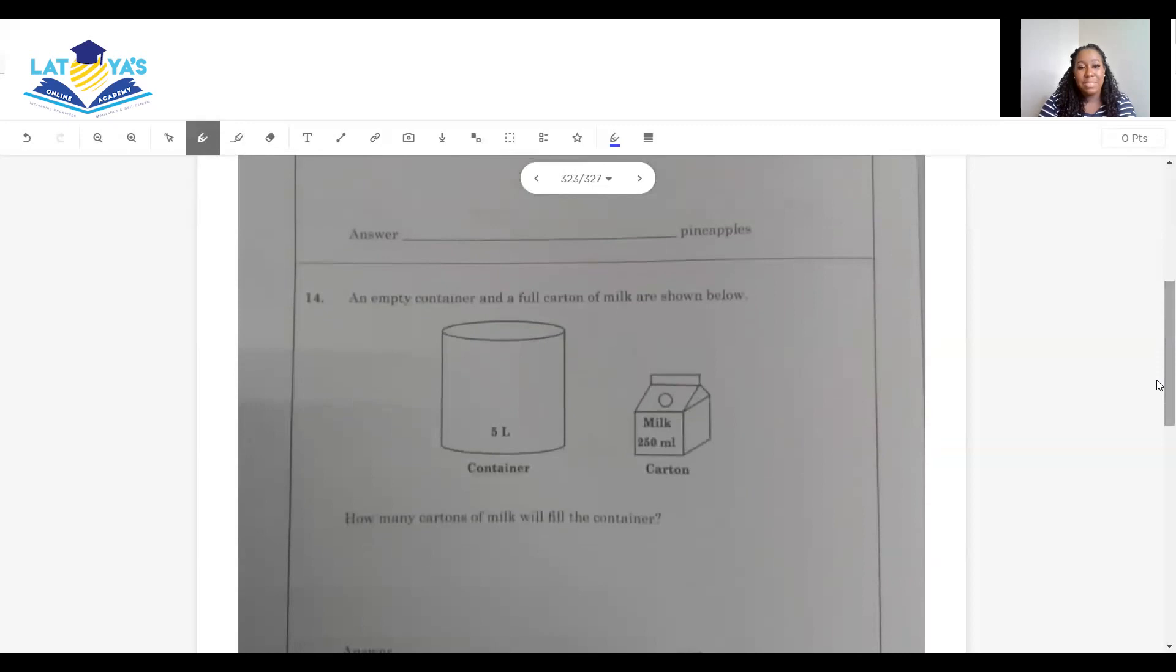Question 14. An empty container and a full carton of milk is shown below. The container is 5 liters, which is equal to 5,000 milliliters. And the milk is 250 milliliters. How many cartons of milk will fill the container? We need to divide. So we are dividing 5,000 by 250. Could cancel off this zero. 25 into 50 is 2. 25 into zero is zero. So I'm getting 20. So I would need 20 cartons of milk to fill this container.